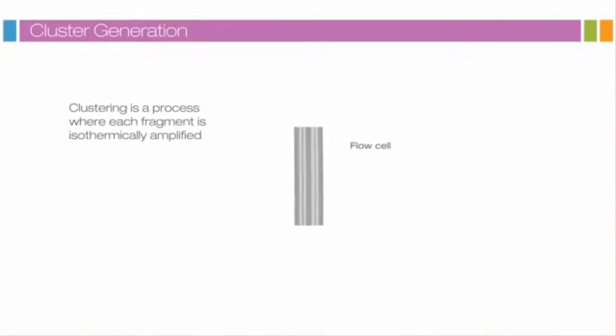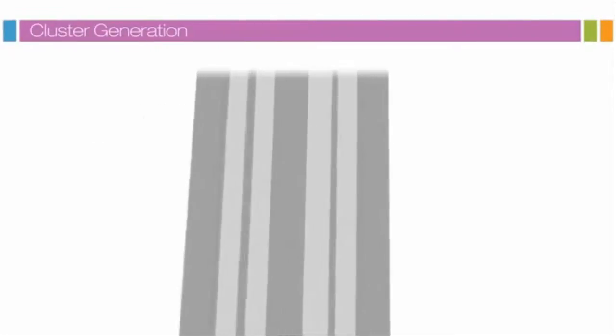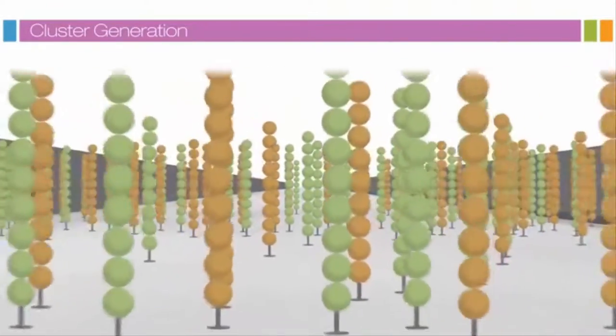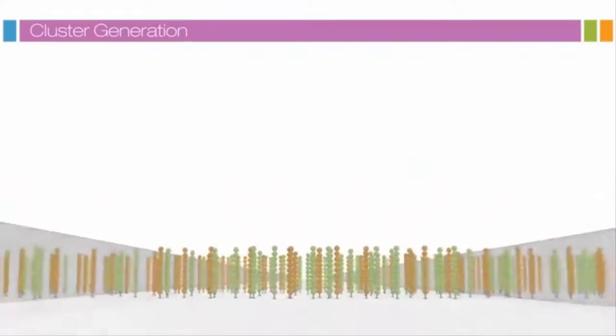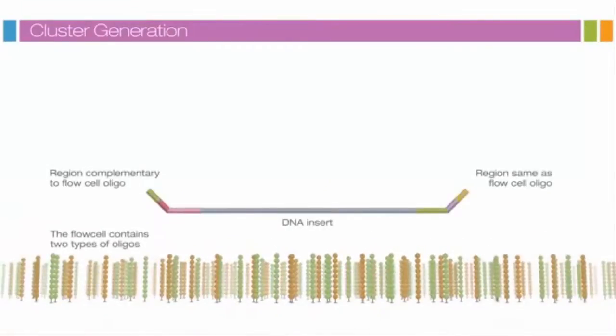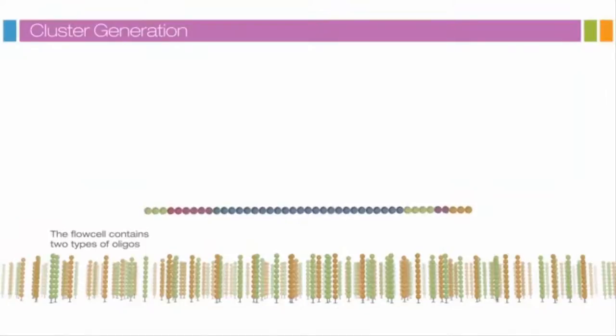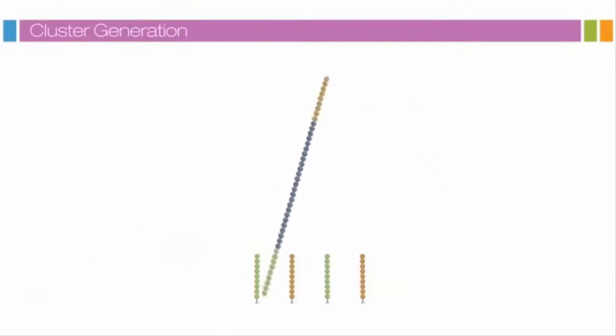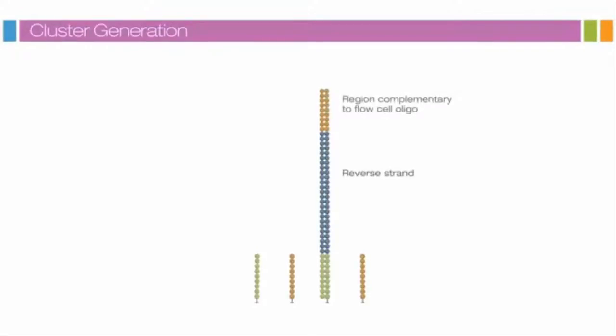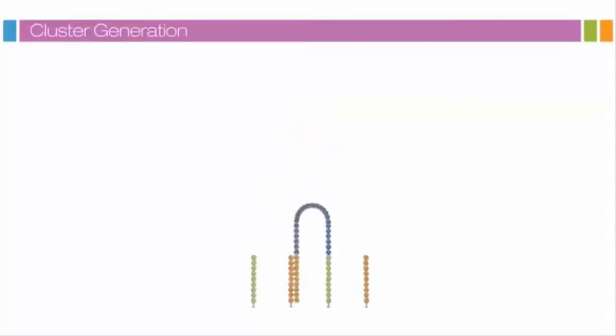Clustering is a process wherein each fragment molecule is isothermally amplified. The flow cell is a glass slide with lanes. Each lane is a channel coated with a lawn composed of two types of oligos. Hybridization is enabled by the first of the two types of oligos on the surface. This oligo is complementary to the adapter region on one of the fragment strands. A polymerase creates a complement of the hybridized fragment. The double-stranded molecule is denatured, and the original template is washed away.